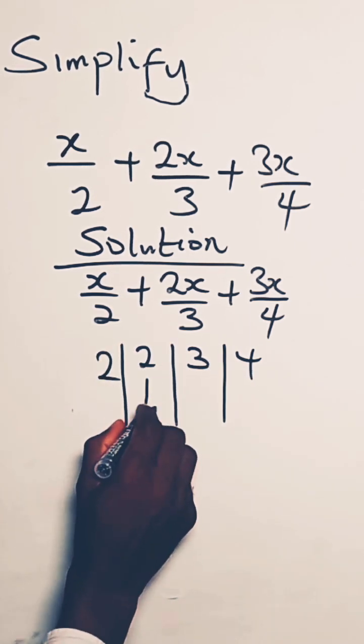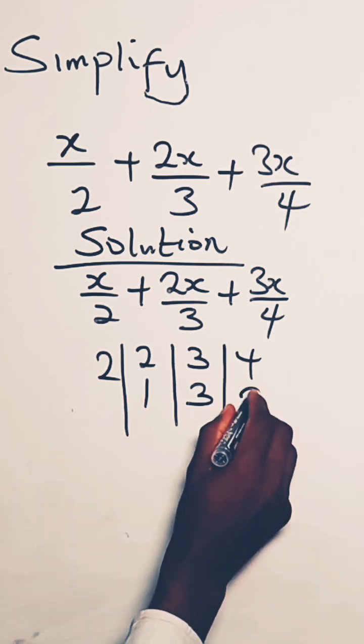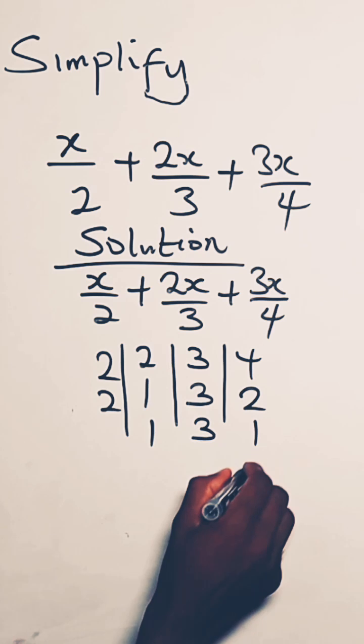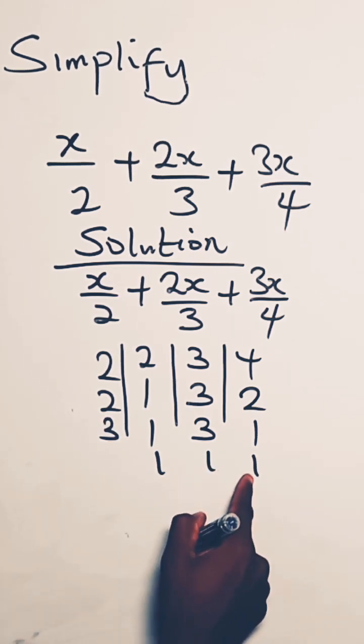So let's start with 2. 2 in 2 is 1. 2 cannot go in 3, we repeat it back. 2 in 4 is 2. So we use 2. We have 1, we have 3, we have 1. So we use 3. We have 1, 1, 1. So we have reduced it to 1, 1, 1.